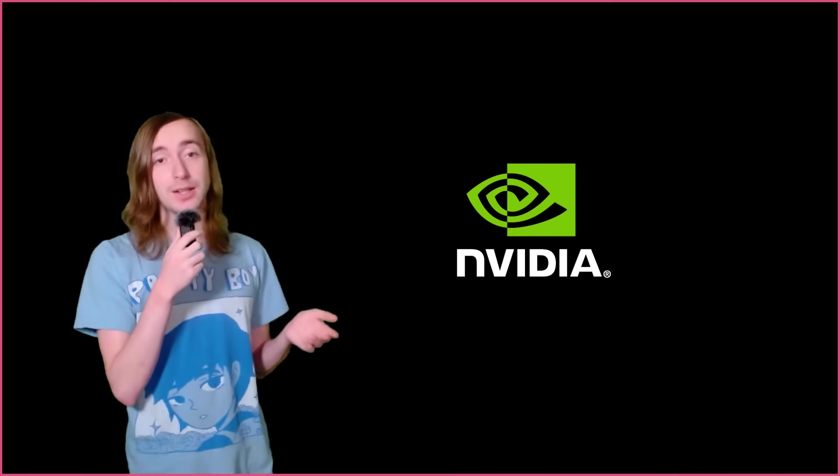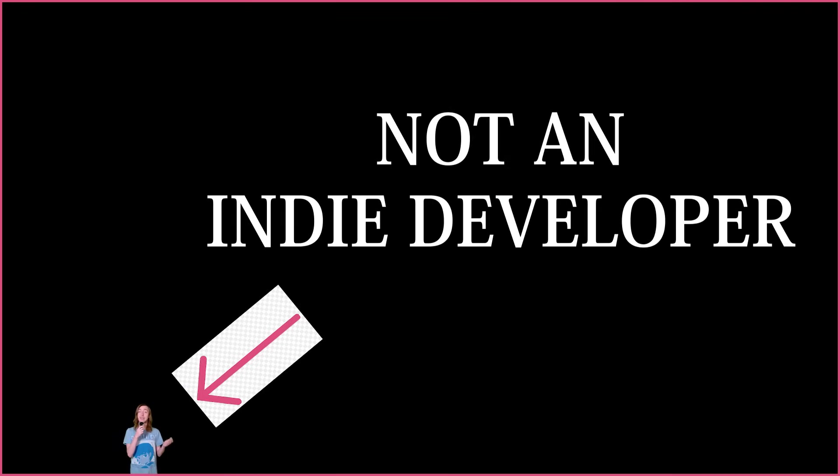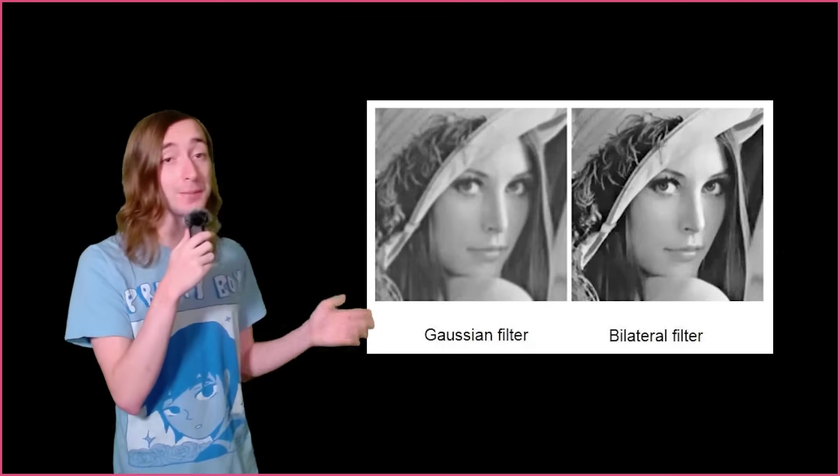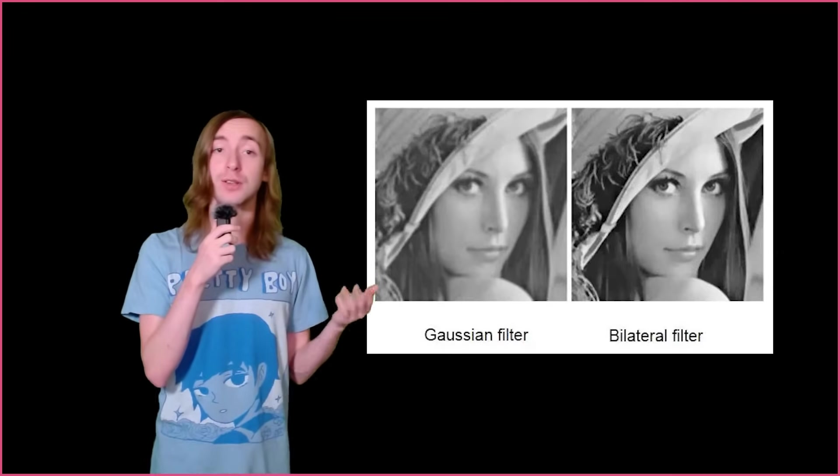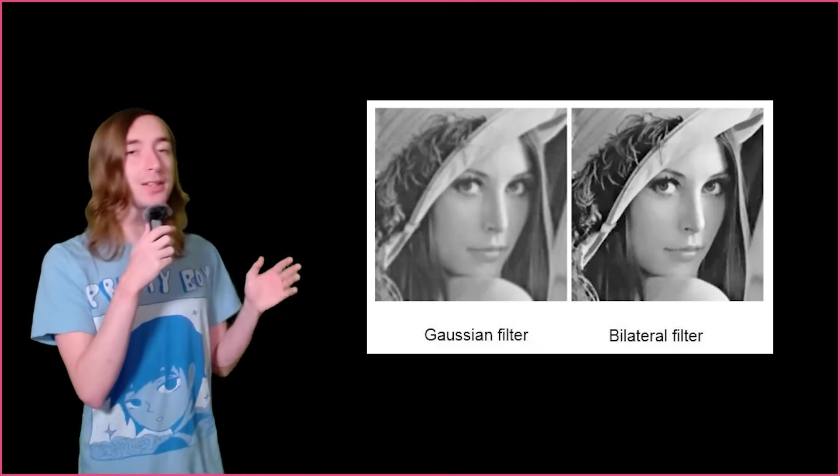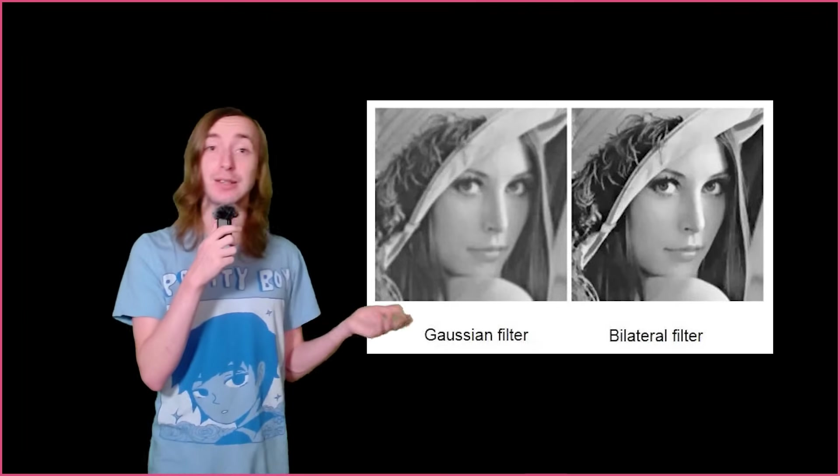Fortunately, in the modern era, we have companies like Nvidia developing machine learning algorithms for denoising which are extremely effective, but for us indie peasants, we have to settle with something like the bilateral filter, the most common solution for denoising images invented sometime around 1995. Unfortunately for you, this video is not about the bilateral filter.